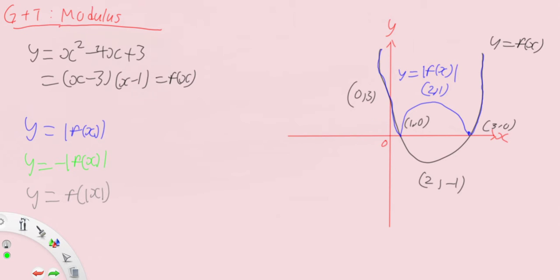So the graph will look something like this. The points of intersection remain at (1, 0) and (3, 0) because mod of 0 is 0, and minus 0 is still 0. This will be our graph for y equals minus mod f(x).